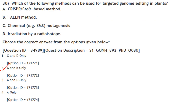Which methods can be used for targeted genome editing in plants? Answer is A and B only — the CRISPR-Cas9 based method and the TALEN method. Answer is option 2.